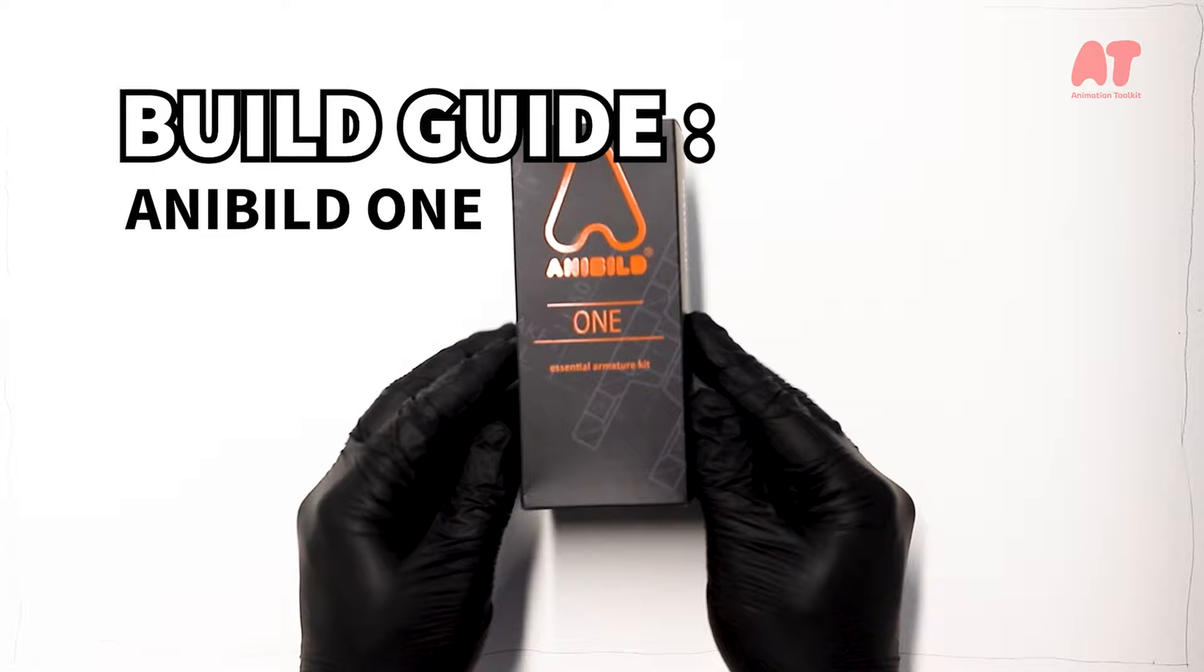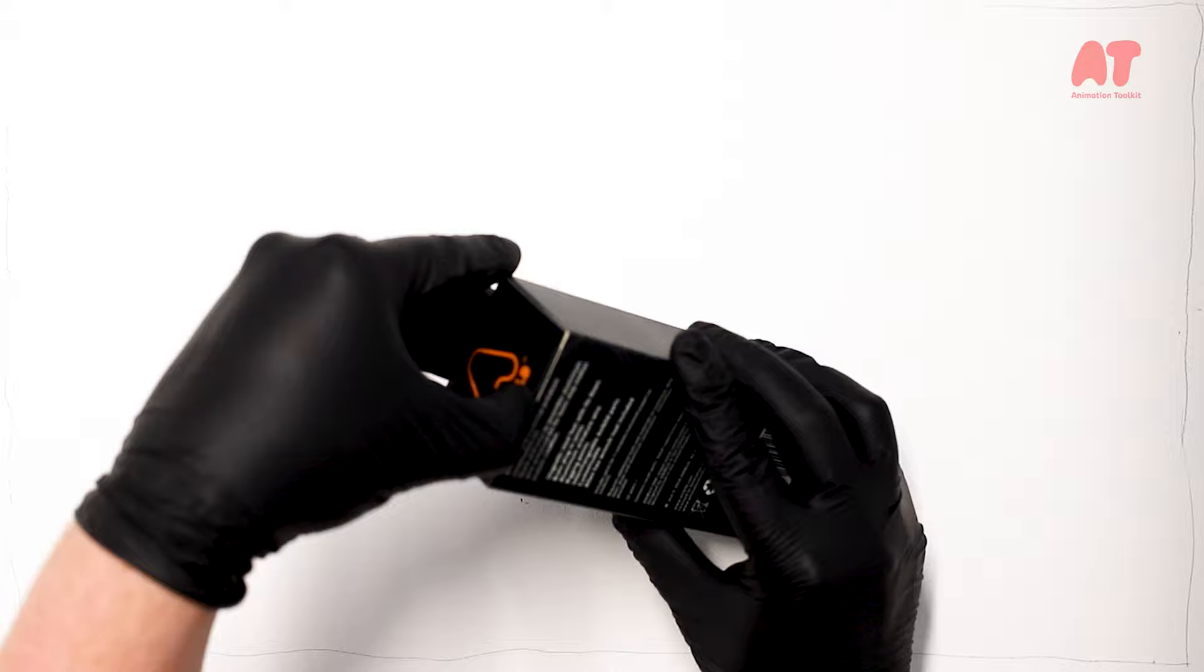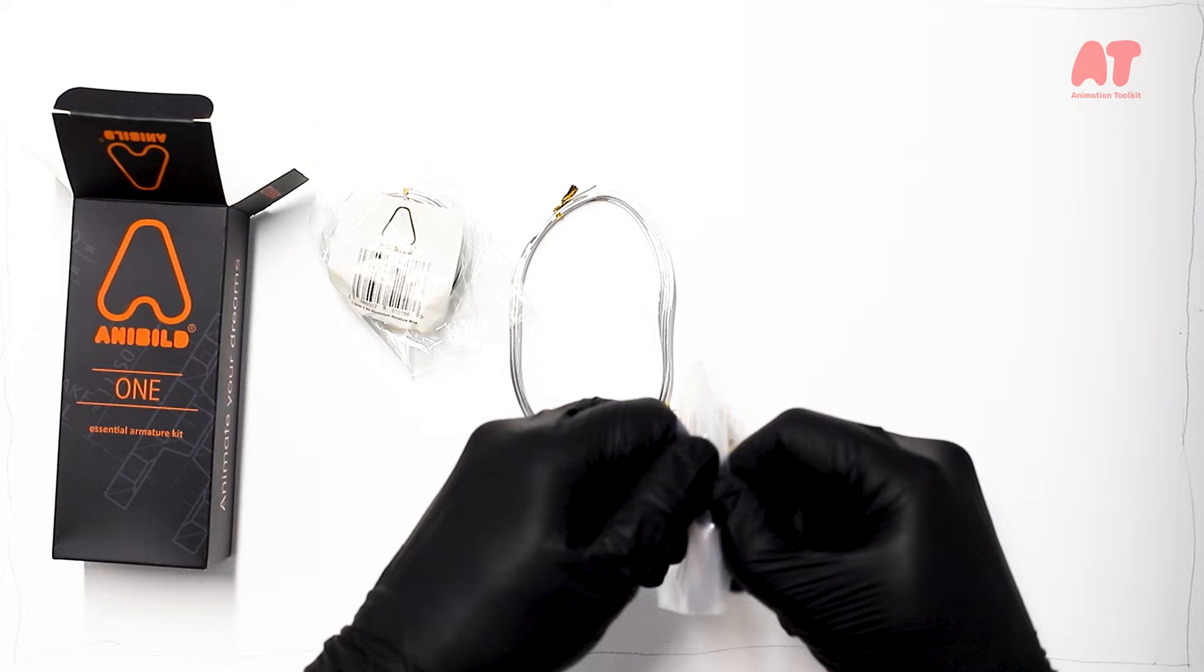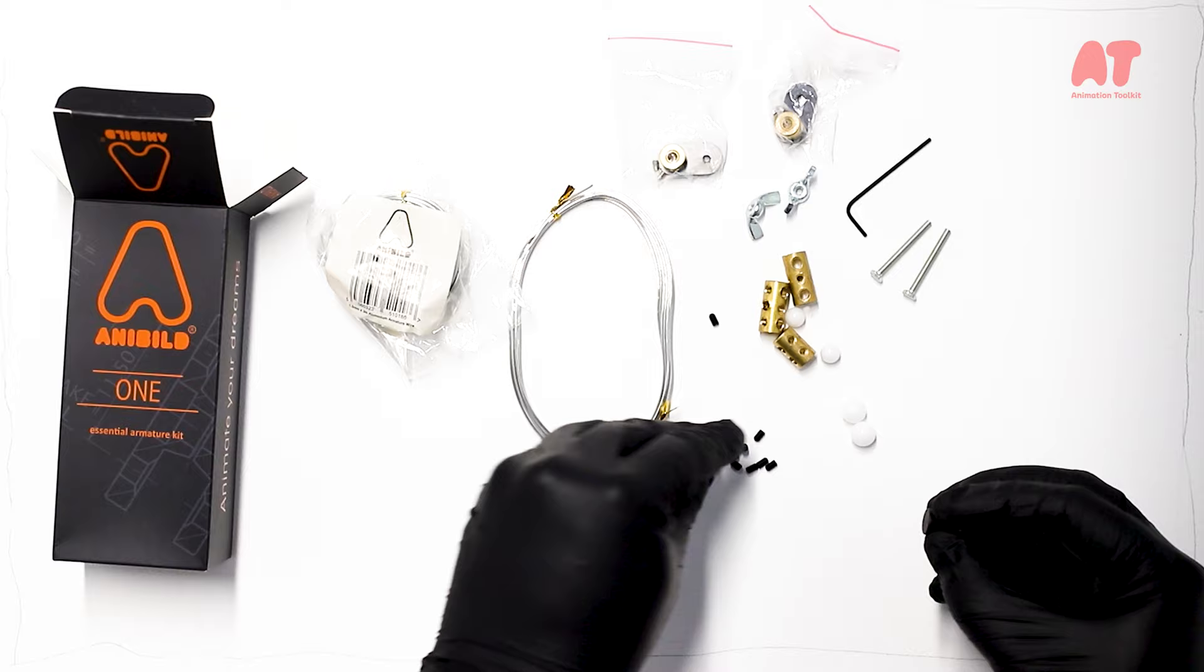Hi guys, it's Wes from Animation Toolkit. Thanks for joining us today on this build guide for the AniBuild 1, the entry-level animation armature for stop-motion animation and puppet building. Get familiar with the pack, open it up, and check all the parts against the instructions. Make sure everything's there.